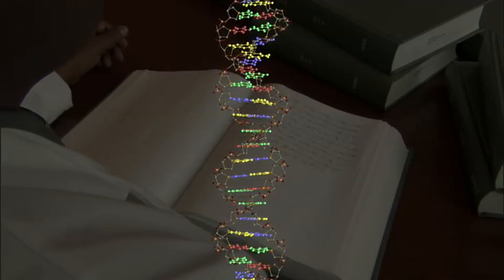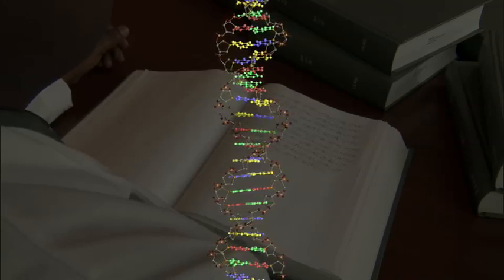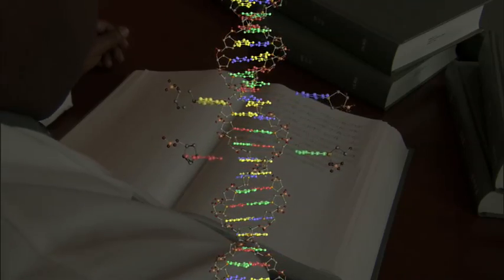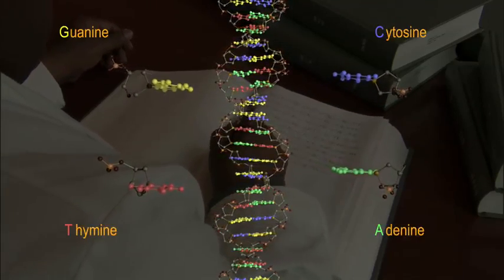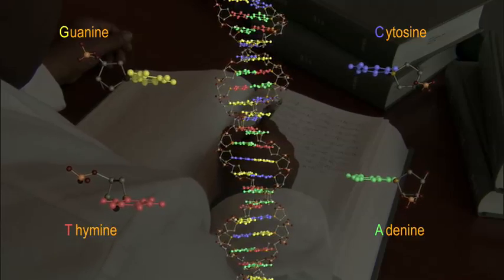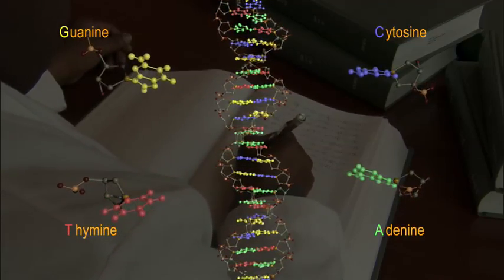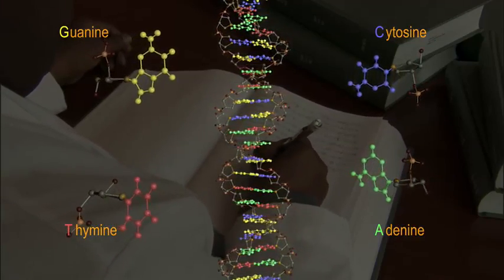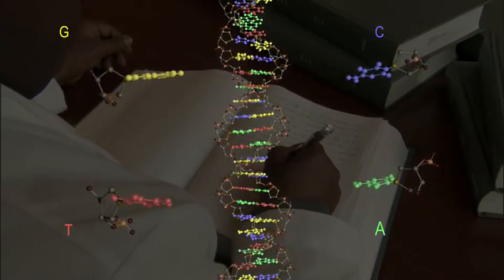These steps of the DNA ladder are composed of just four different molecules: adenine, thymine, cytosine, and guanine. And it is common to refer to them by their initials: A, T, C, G.